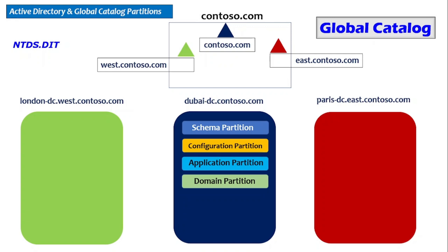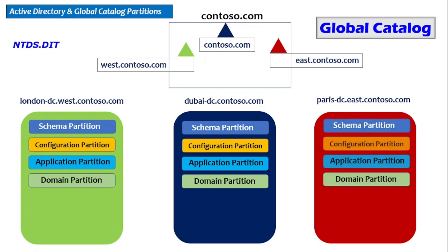These four partitions are: schema, configuration, application, and domain partition. Schema, configuration, and domain partition are mandatory; application partition is optional. If we integrate an application such as DNS into Active Directory, a fourth partition is created called the application partition. Today DNS is absolutely integrated with every domain controller in our forest. When all three domain controllers are configured as Global Catalogs, some additional partitions are created — these are called Global Catalog partitions.